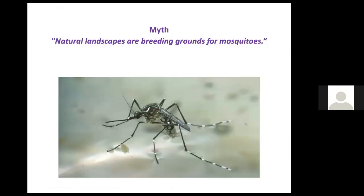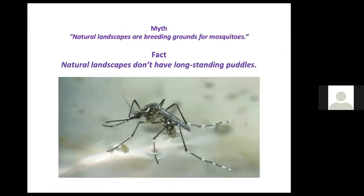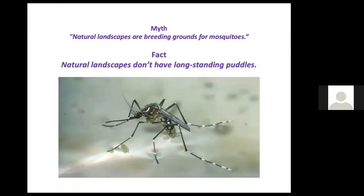Mosquitoes are a concern, but standing puddles that offer breeding grounds are actually more likely in lawns that don't absorb much water. If you choose to have a pond — ponds are great for wildlife including insects and birds — keep in mind it's stagnant water that's the problem. Keep water in motion with a solar-activated pump, or stock the pond with koi, goldfish, or mosquito fish, and the bacterium BTI, commercially available as mosquito dunks or mosquito bits. Put them in the water and they're quite effective at killing mosquito larvae while being safe to the environment.